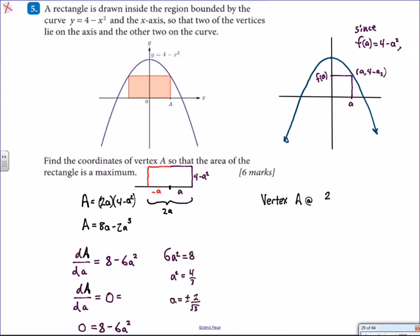We get plus or minus 2 over square root of 3. So we'll have the optimal area if we went 2 over square root of 3 to the right or to the left. You can see the symmetry here is why we have the two solutions.